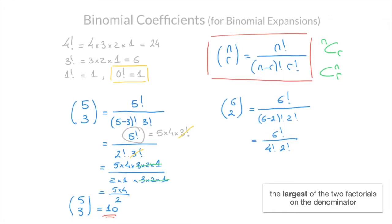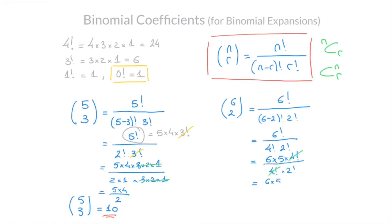We can rewrite the numerator as 6 times 5 times factorial 4 over factorial 4 times factorial 2. We can now cancel out these factorial 4s, and we're left with 6 times 5 over factorial 2, which is equal to 2. We now notice that the 6 on the numerator can be written as 2 times 3, so cancelling out the factors of 2, we're left with 3 times 5.